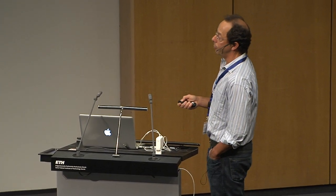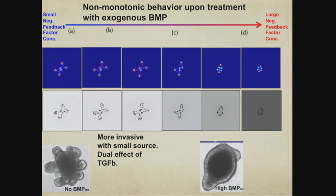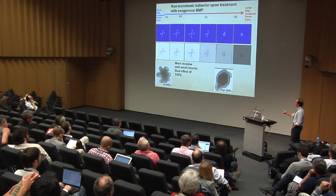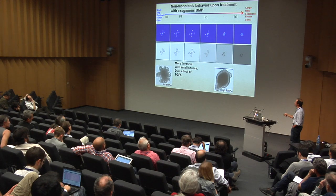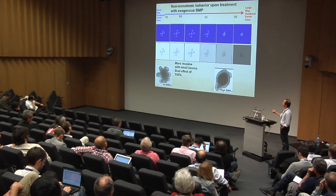One can do parameter investigation more cheaply with the model. If we take the negative regulator and do intermediate values, the shape actually becomes more unstable — you see non-monotone behavior, and the tumor can even fragment. This is suggestive of a dual effect of this negative regulator, which is well known in cancer. That process emerges naturally from the model, although there can be other effects such as increased cell mobility that we're not modeling. So the model can make predictions.